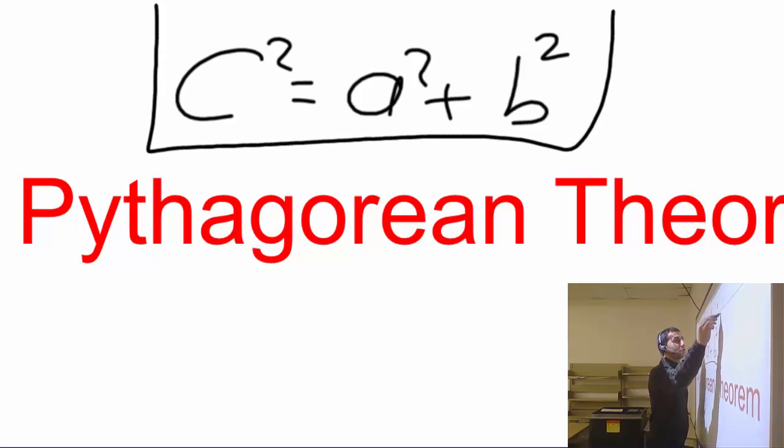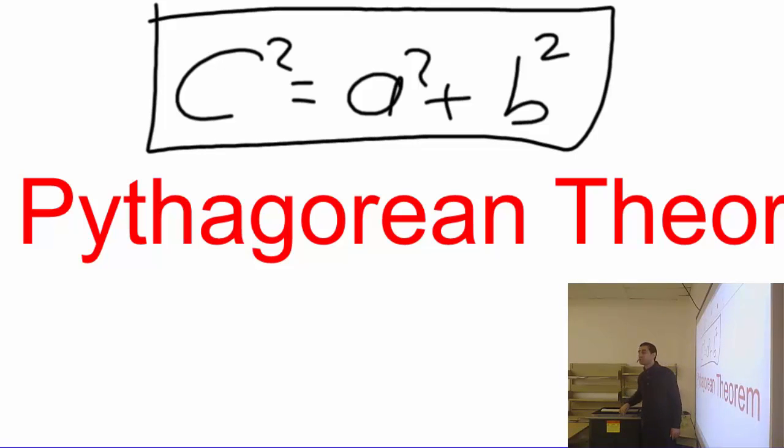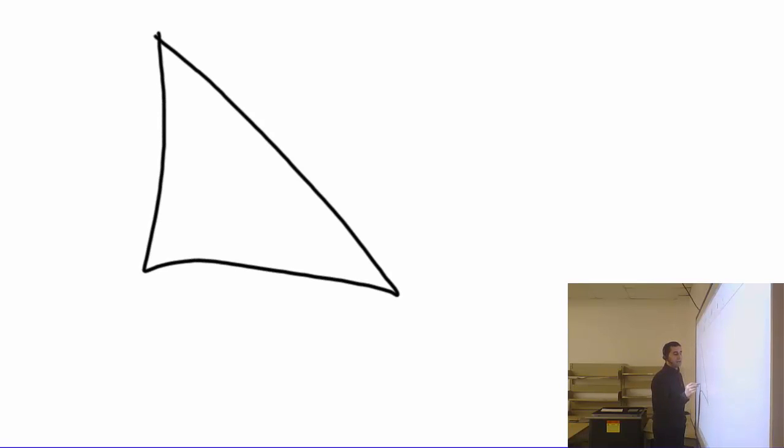Many students call me Mr. C-squared equals A-squared plus B-squared. So you need to remember my middle name for the Pythagorean theorem. What it means is that you must, must, must have a right triangle. This is the symbol.